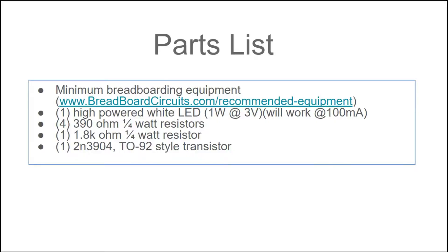If you want to build this project, you're going to need some minimum breadboarding equipment, and you can find that information at breadboardcircuits.com. You're going to need a high-powered white LED with a 3-volt drop — a 1-watt LED will work, but we're only going to run it at 100 milliamps because of the 2N3904 transistor's limitations. You're going to need 390-ohm resistors and a 1.8K resistor, and of course the 2N3904 transistor.